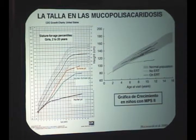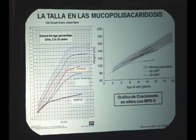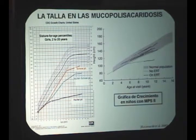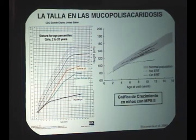La talla está muy afectada en estos chicos. En las percentilas normales, lo esperado es que en MPS I Hurler la talla esté más afectada que en Hurler-Scheie y Scheie. Una vez establecida la terapia de reemplazo enzimático, se modifica de manera significativa el crecimiento. Pero se tiene que diagnosticar tempranamente para que el tratamiento sea efectivo: de nada sirve un diagnóstico tardío porque los resultados terapéuticos serán muy pobres si el abordaje es más tardío, pensando en las formas de presentación temprana.